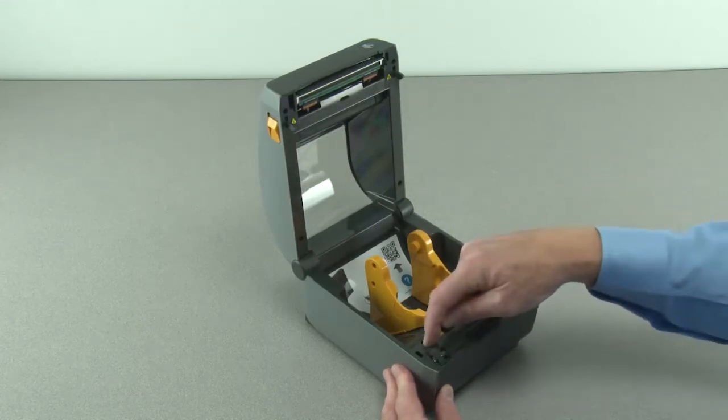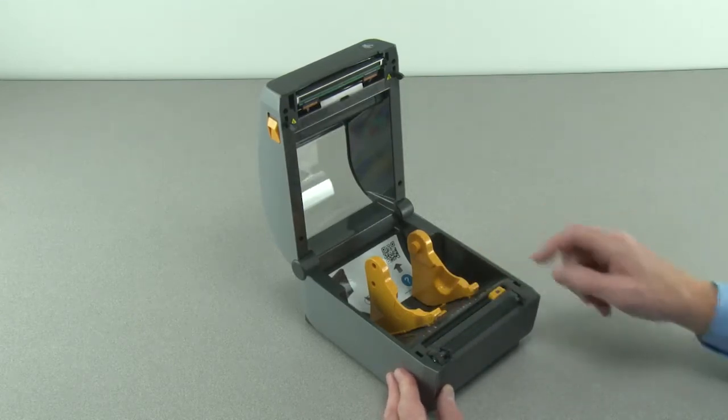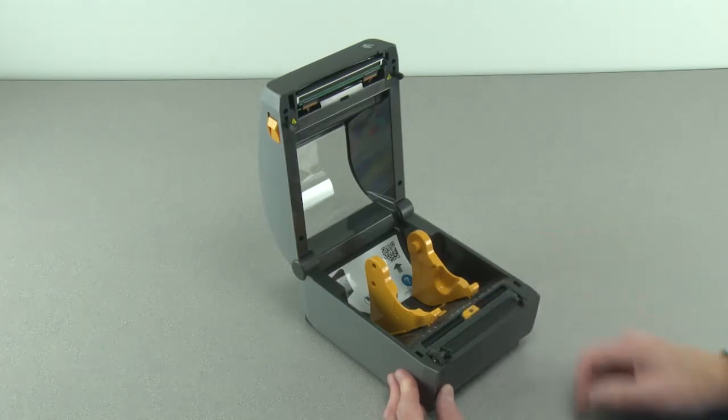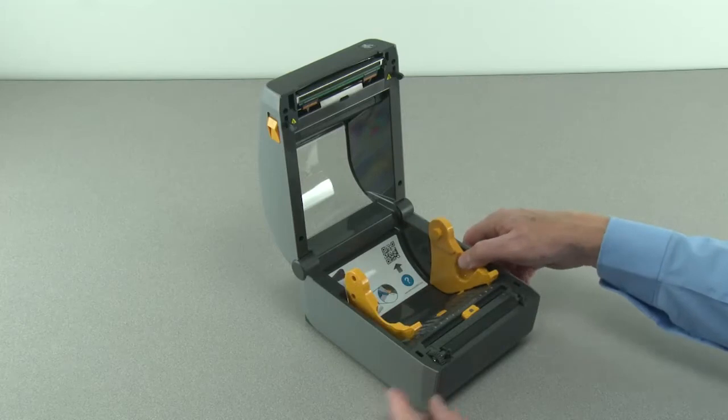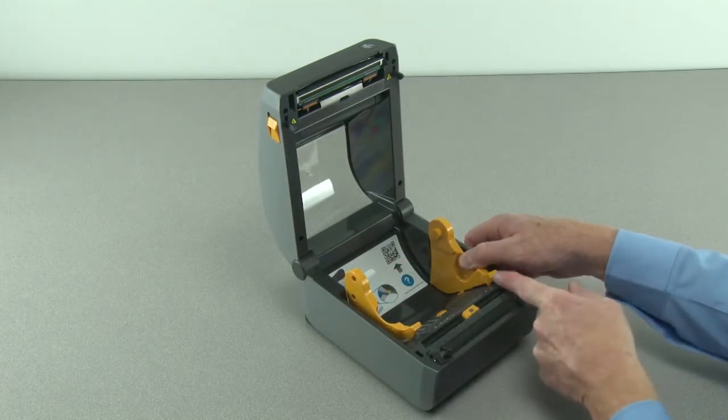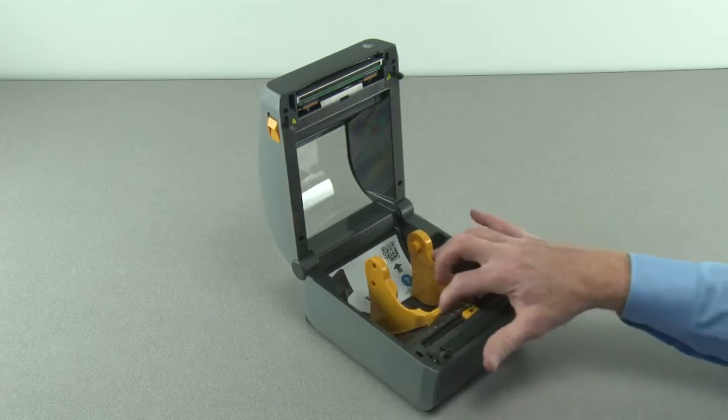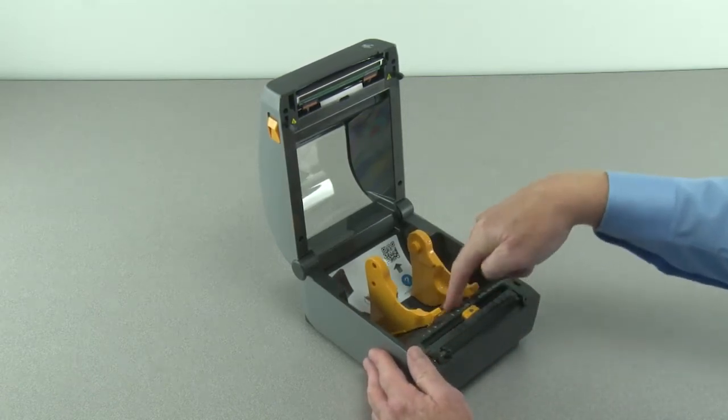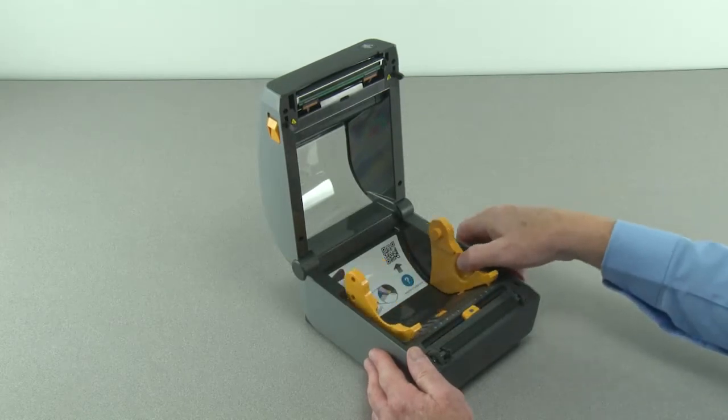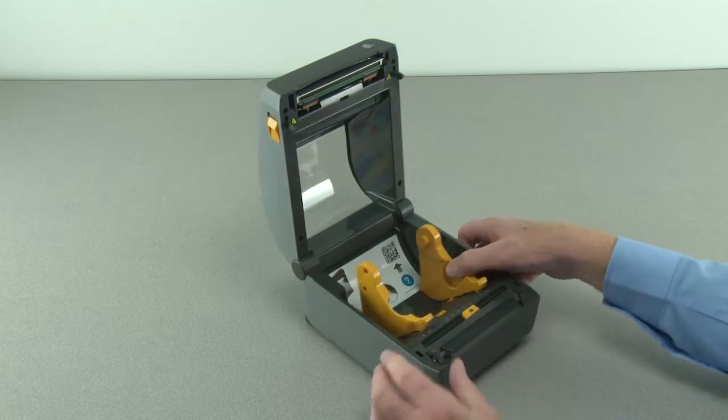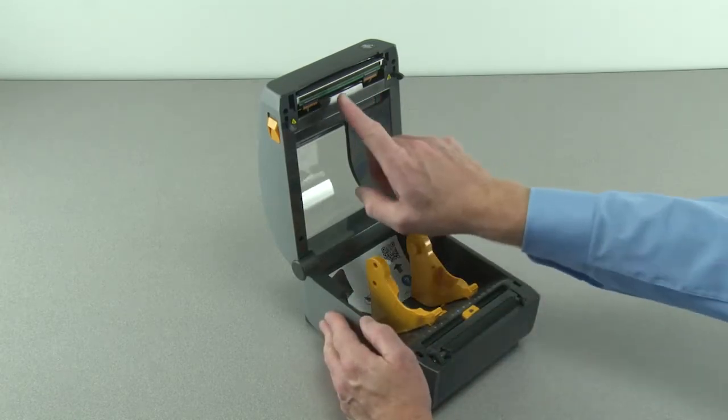Movable media sensor default position for continuous and label media, roll holders with integrated media guides, media guide stop adjustment, quick help QR code, and print head.